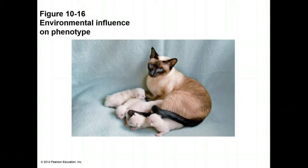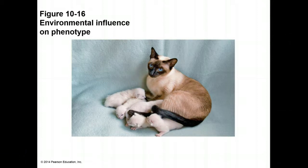Newborn Siamese cats can demonstrate how environmental influence plays a role in a phenotype. A Siamese cat has the genotype for dark fur all over its body. However, the enzyme that produces the dark pigment is inactive at temperatures above 93 degrees Fahrenheit. When kittens are in the warmth of the mother's uterus, the enzyme is inactive and they are born with pale fur everywhere. When they are born, the ears, nose, paws, and tail will turn dark because they are exposed to cooler temperatures outside of the womb. The rest of the body will have a color related to the temperatures in that region of the body.